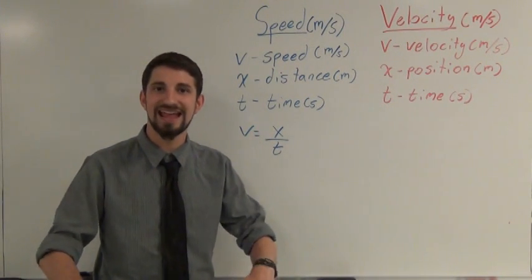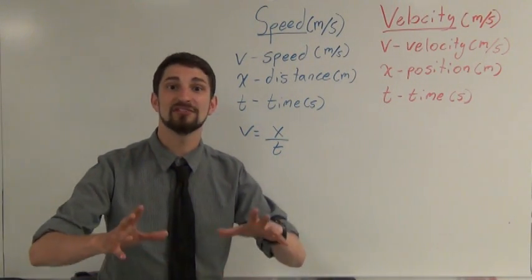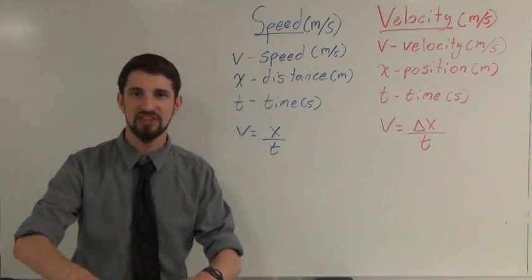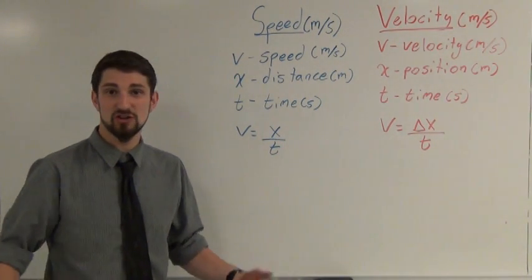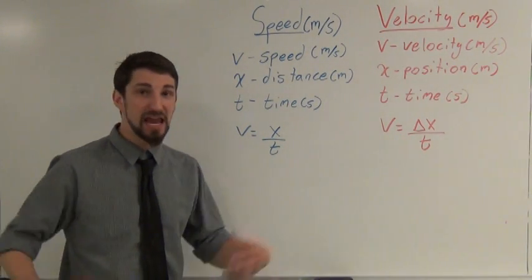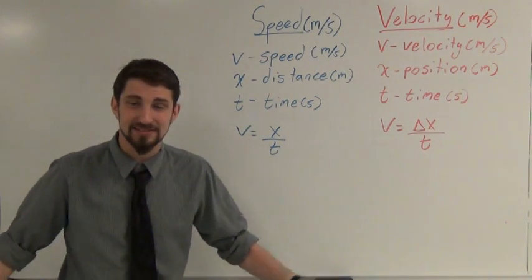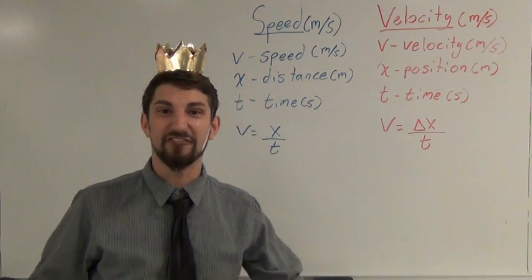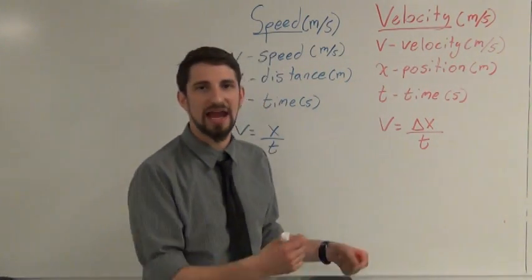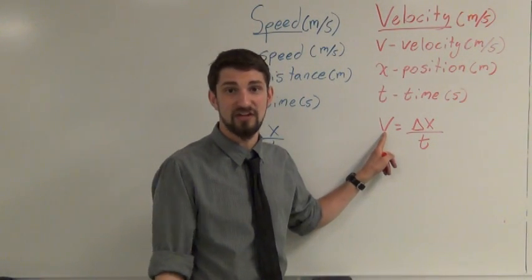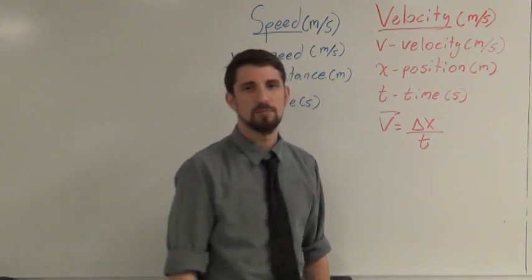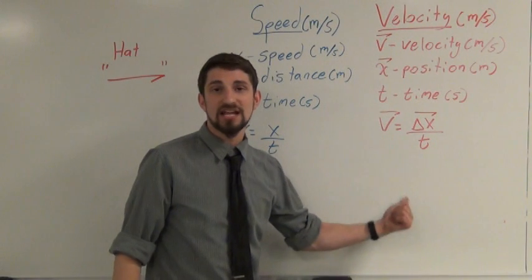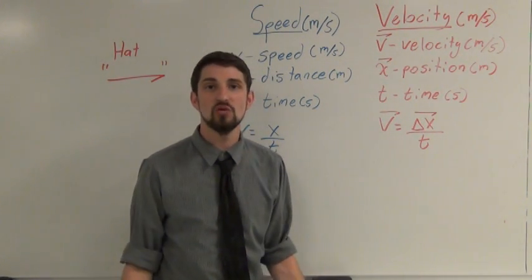Remember how velocity is a vector? That means direction matters, and if direction matters we have to look at displacement. So when speed is distance over time, velocity is displacement over time. You might wonder how v can be both speed and velocity, and how x can be both distance and position. To distinguish a vector from a scalar, we use a hat — a little arrow on top of the quantity. Velocity is a vector, so we put a hat on it. Every time you have a vector, put a hat on it. Speed has no hat; velocity has a hat.